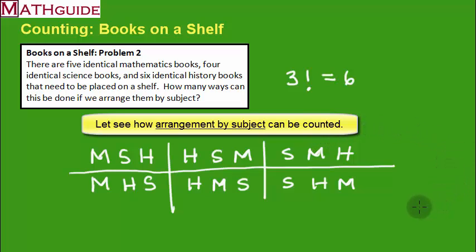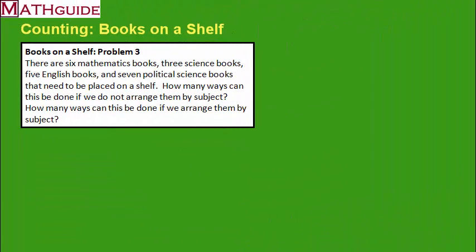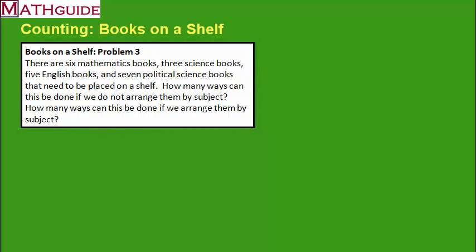Here's our third problem. There are six math books, three science books, five English books, and seven political science books that need to be placed on a shelf. We'll assume all books are different. Part one: how many ways can we arrange them if we do not arrange by subject? Part two: how many ways if we do arrange by subject?